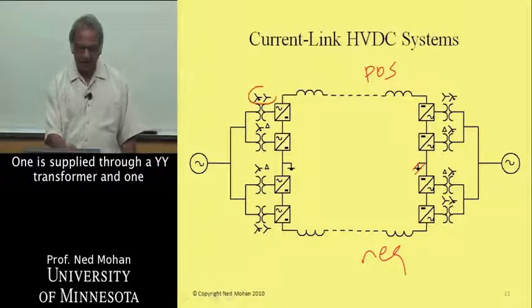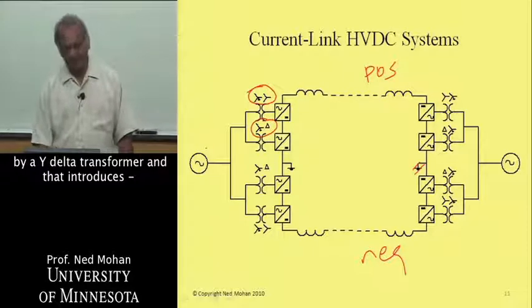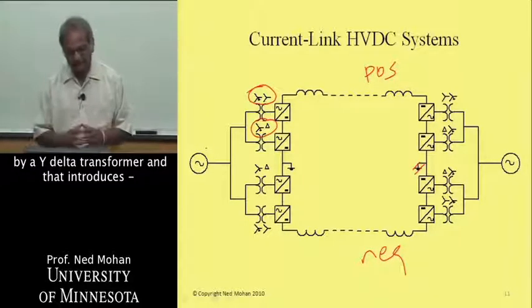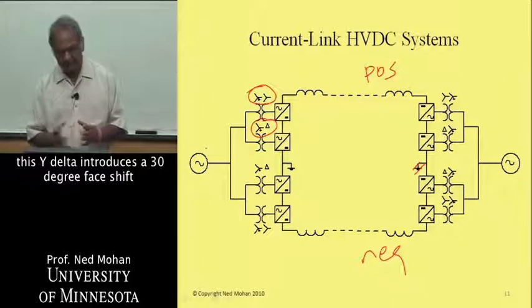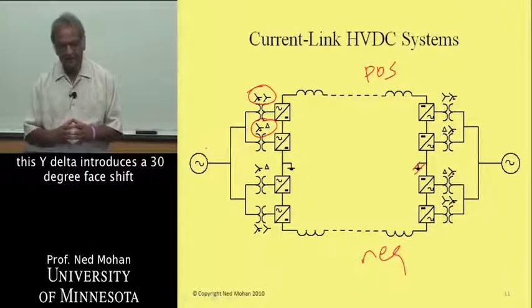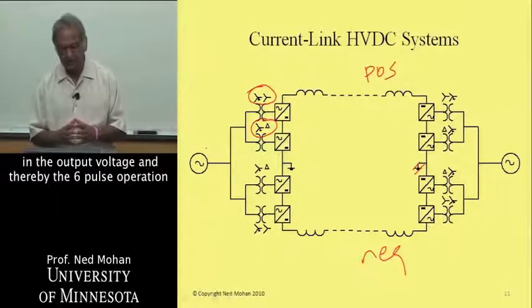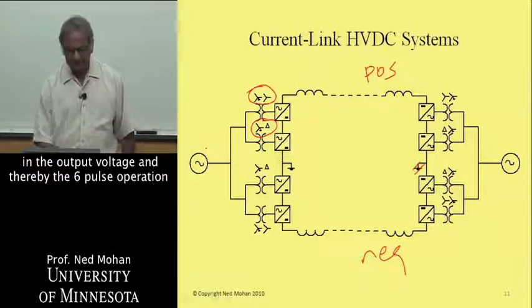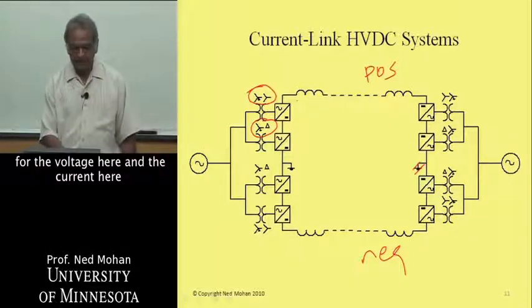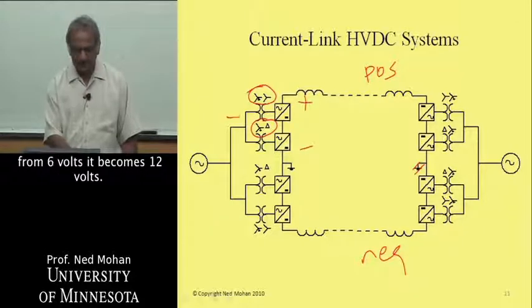These poles are generally made up of two thyristor inverters connected in series. One is supplied through a YY transformer, and one by a Y delta transformer, and that introduces a 30-degree phase shift in the output voltage.